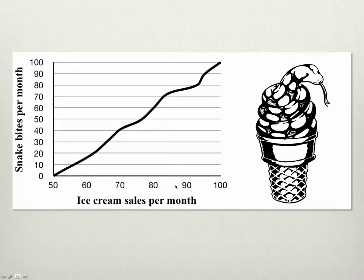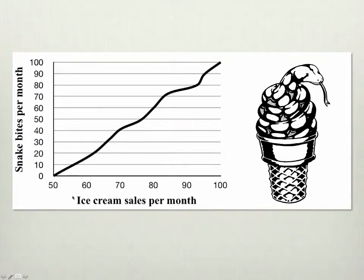If you looked at this data in reality, you might get a positive correlation, but it probably wouldn't be this clean. But just to make the point, let's suppose we find this very, very clean, clear correlation. So there are two questions. Is there a correlation between ice cream sales and snake bites? The answer is obviously yes. That's something I might ask you on a test — I might show you this picture and say, is there a correlation? There is a correlation.